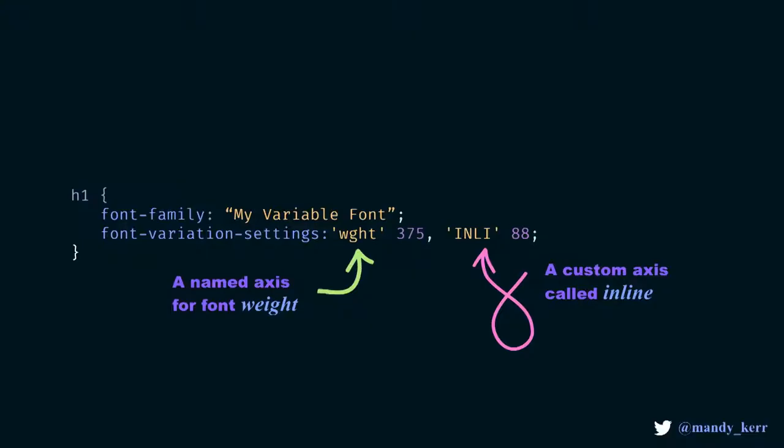That property is called font-variation-settings. It enables us to define as many named and custom axes as we need. Named axes in a variable font are things like weight, width, slant, and optical sizing — anything outside of that is a custom axis. Here I'm defining weight, referenced with the four-character code WGHT, with an associated value. Then separated by a comma, we can define another axis — the custom axis called inline, referenced with the characters INLI, which is determined by the font designer. The key difference is that named axes are in lowercase and custom axes are in uppercase.